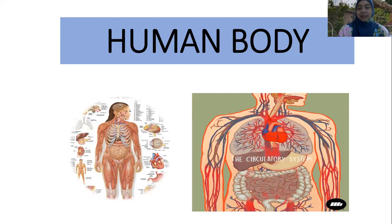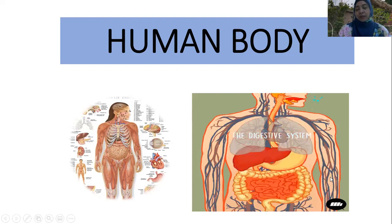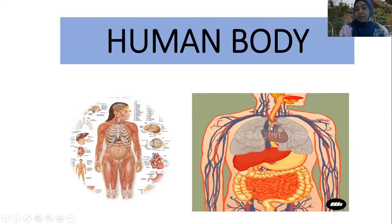We can see the heart sends blood to all parts of the body — to the lungs, to the body, and to the peripheral system. The cardiovascular or hematological peripheral system is about the digestive system, and the previous one we can see is the respiratory system.